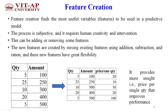Feature creation finds the most useful variables in the given dataset to contribute to a productive machine learning model. This process is very subjective and requires human creativity and intervention. The software engineer must have domain knowledge — that is, knowledge about the given problem statement and the input data — and based on that domain knowledge, intervene in the dataset to perform feature engineering.